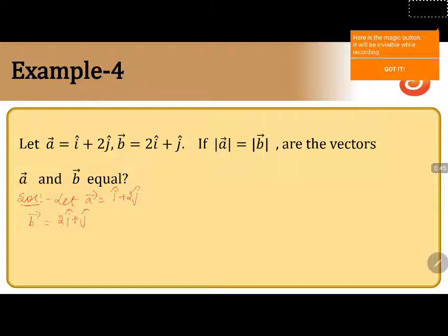First, we will calculate the magnitude of A. Magnitude of A is given by the square root of i-coefficient squared plus j-coefficient squared, that is square root of 1 squared plus 2 squared, which equals square root of 1 plus 4, that is root 5.